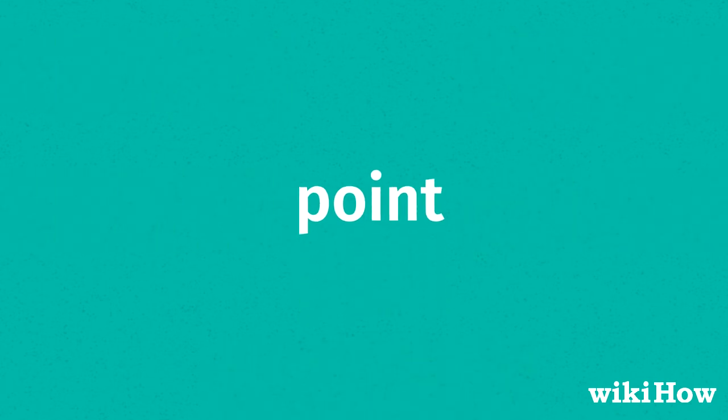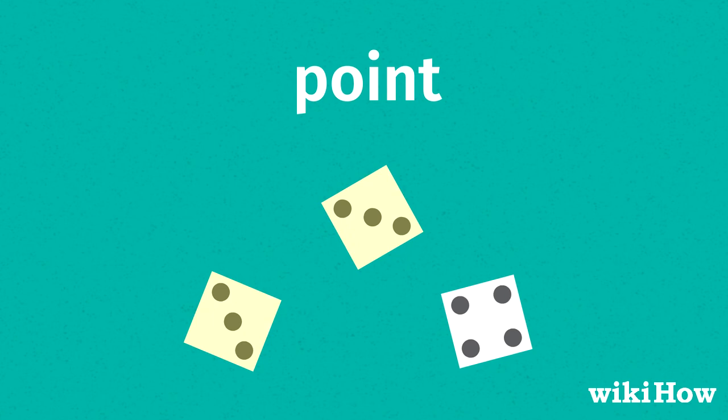For example, if the banker rolls a pair of threes and a four, their point is four.